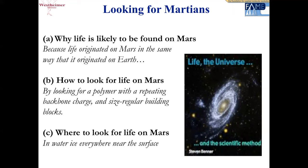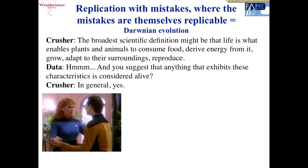Darwinian evolution is thought to be the only mechanism by which matter can self-organize to give properties we value in life. The core of molecular Darwinian evolution requires replication — but not just simple replication. It has to be replication with mistakes, and those mistakes themselves have to be replicable. That's the only way you can have the feedback of natural selection. So what we're looking for on Mars is molecules that support replication with replicable mistakes.